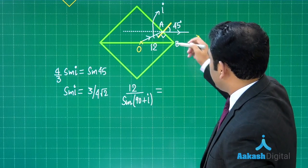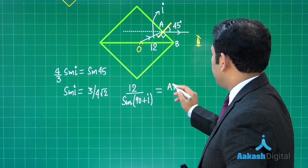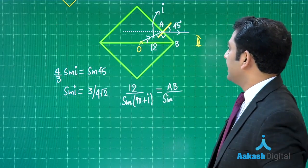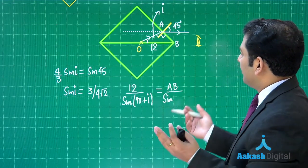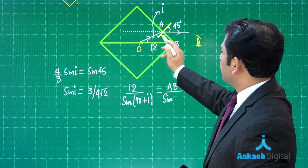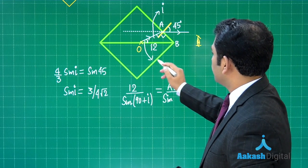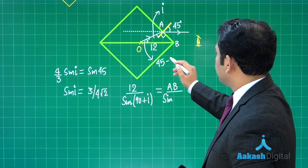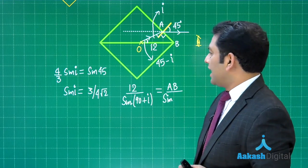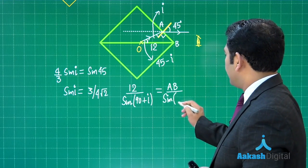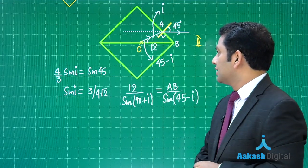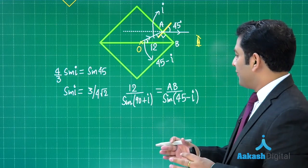This is what I need to calculate. This is 45, so this is 90. Specifically, this angle is going to be 45 minus i. So sin(45 - i) is what we need. Now we can calculate the value of AB.